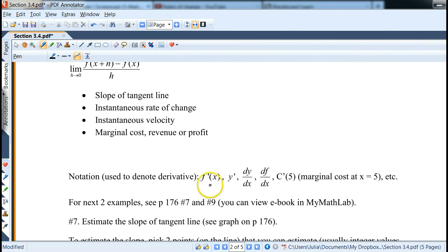f prime of x, this is the most common one, y prime, dy over dx, this is more like the slope notation, change of y over change in x, or df over dx, or c prime of 5.